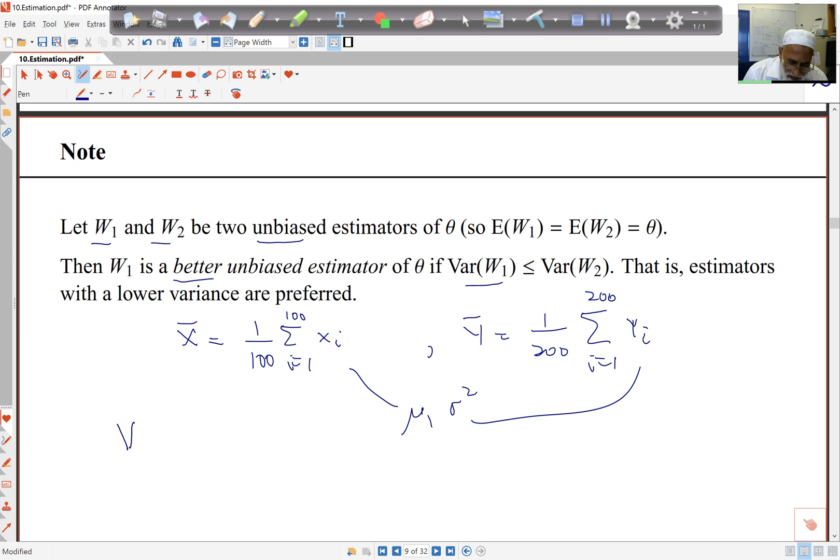So now the variance of X bar here is sigma squared upon n, so it's sigma squared upon 100. And the variance here of Y bar is again sigma squared upon n, sigma squared upon 200. So you can see clearly here the variance of this one is smaller than the variance of this one. So here Y bar is a better estimator than X bar, simply because it's from a larger sample size.